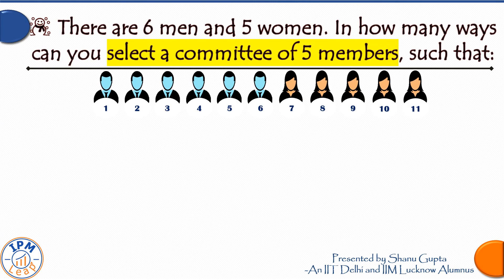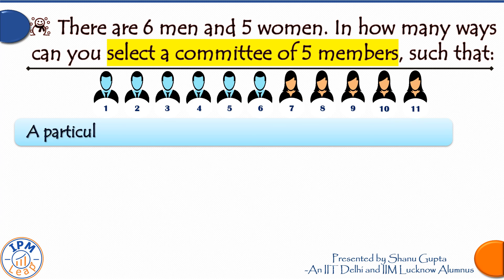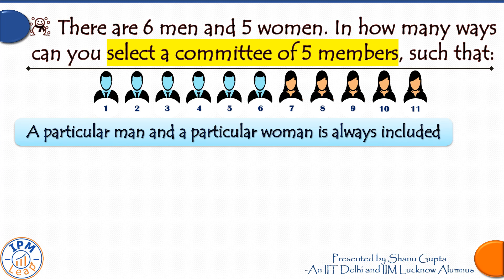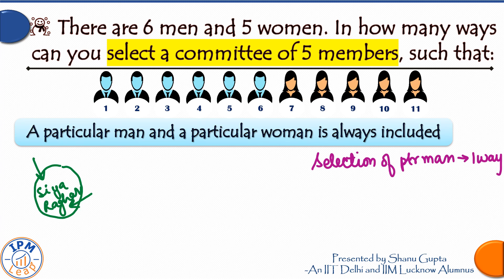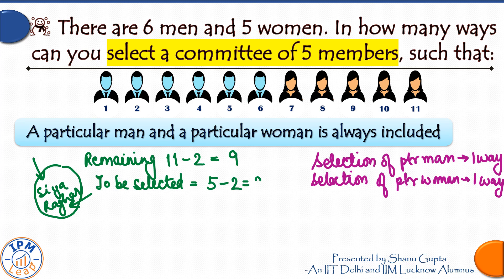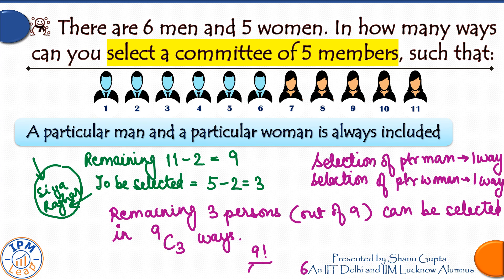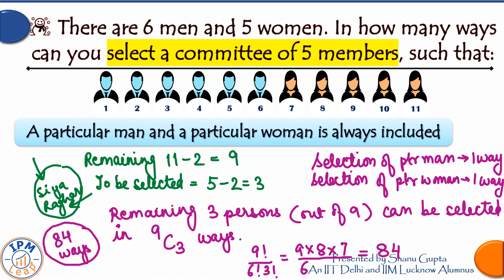Now, in how many ways can we form the committee so that both a particular man and a particular woman — Raghav and Sia — are always included? Both are fixed, each selected in only one way. With two spots filled, we need three more from the remaining 11 − 2 = 9 persons. Three out of nine can be selected in 9C3 = 84 ways. There are 84 committees with both particular persons always included.